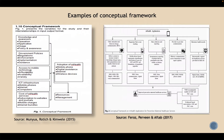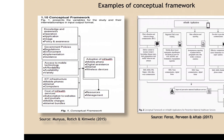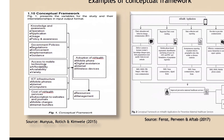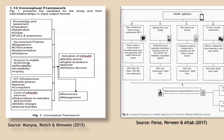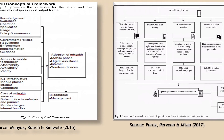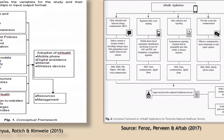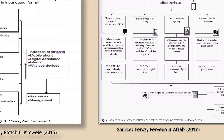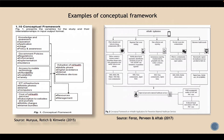Here are two examples of conceptual frameworks. The first shows how adoption of mHealth is affected by variables such as knowledge and awareness, government policies, access to mobile technology, ICT infrastructure, and the cost of mHealth services — from a study by Munua, Rotich, and Kimwele in 2015. The second shows how mHealth applications lead to improved preventive maternal health care services, from a study by Feroz, Pavin, and Aftab in 2017.